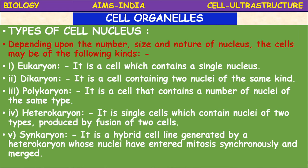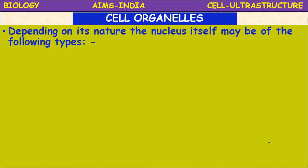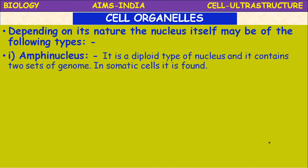To summarize the types of nucleus based on number: eukaryon, dikaryon, polykaryon, heterokaryon, and synkaryon. Based on the nature of the nucleus itself, the nucleus may be of different types. Amphinucleus: it is a diploid type of nucleus, containing two sets of genomes, and it is found in somatic cells.